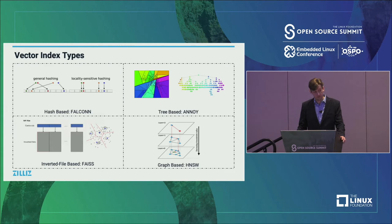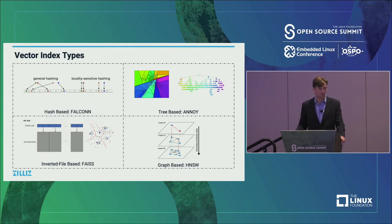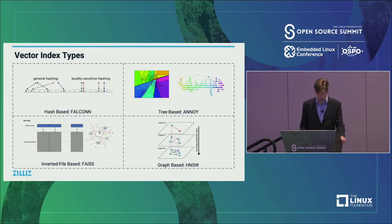Next is graph-based indexing, with the main library being HNSW. You build a multi-layer graph where the top layers are sparse and get denser as you go down. When searching, you find the closest node on the top layer, then go down a layer, and keep doing that process. As you go further down, results are closer and closer because it gets more dense. These are the four main types of vector index types.